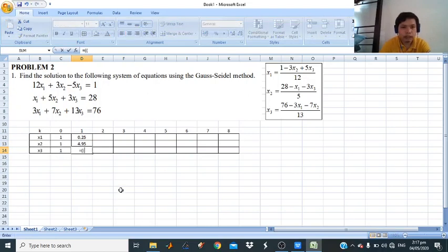Then the last is x3, we have 76 minus 3 times x1. So this is your x1, minus 7 times x2. That is the new, divided by 13.